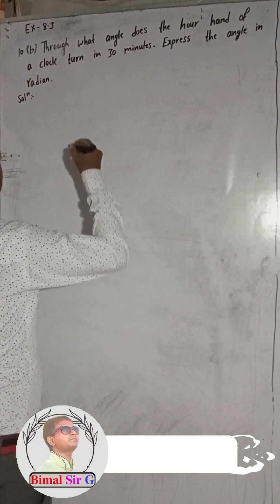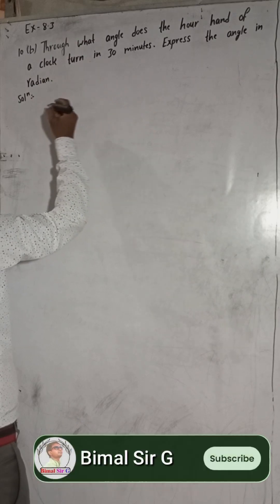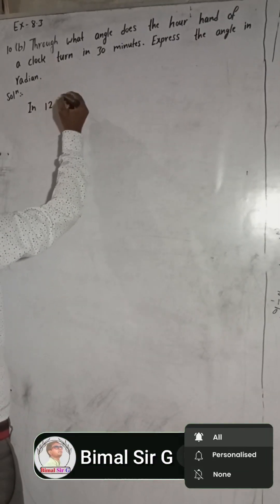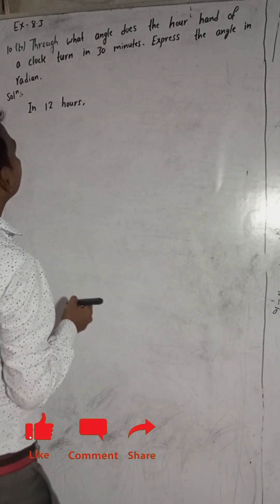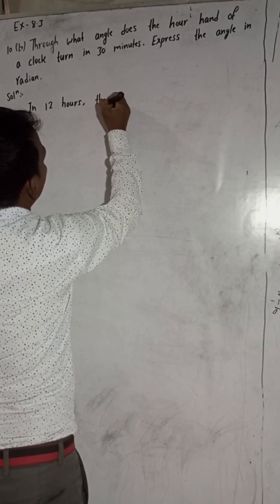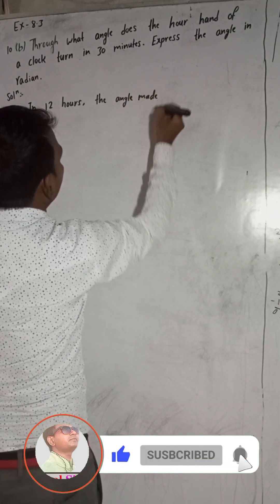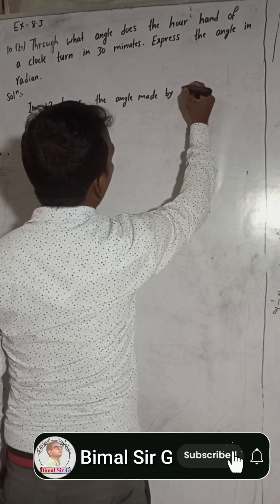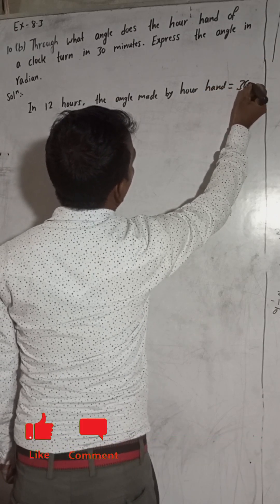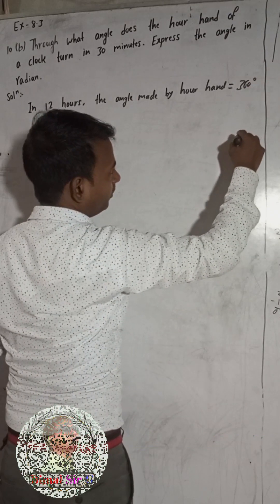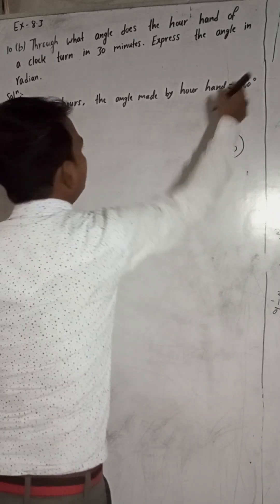So, what do we have to do now? We need to find the angle made by the hour hand. In 12 hours, the hour hand will take one complete rotation. That means the angle from start to finish is 360 degrees.